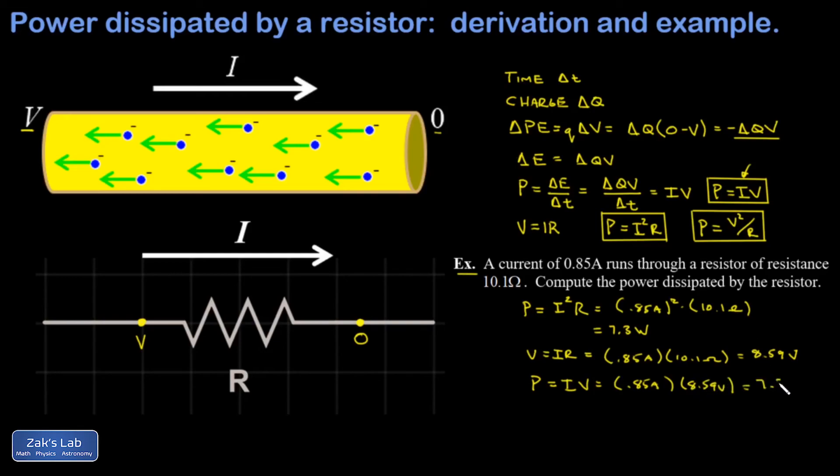And again, I get 7.3 watts dissipated by the resistor. And then finally, just for the sake of completeness, I can use V squared over R. And that's 8.59 volts squared over the resistance of 10.1. And again, I get 7.3 watts dissipated by the resistor.